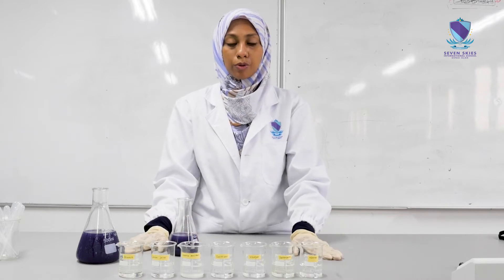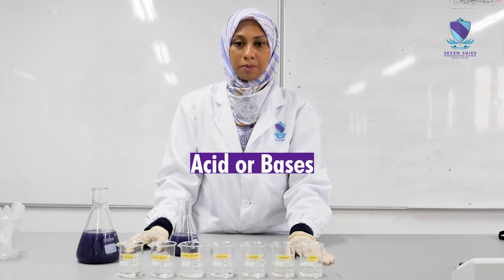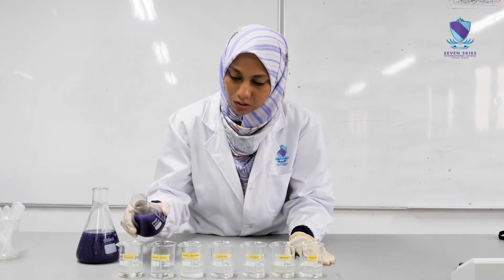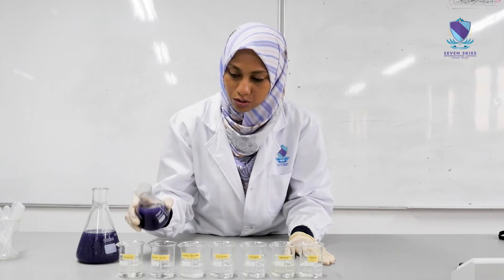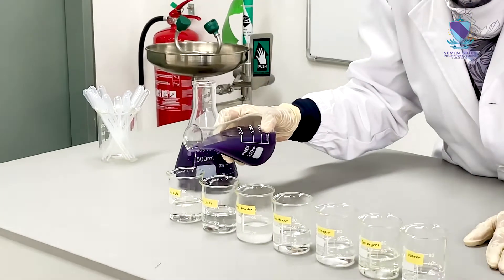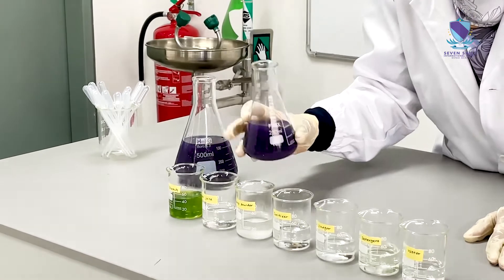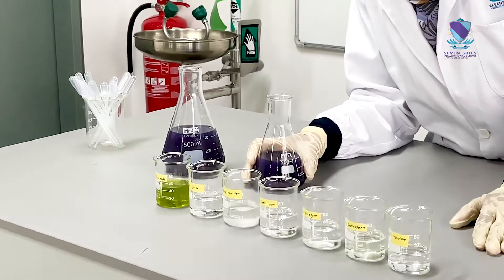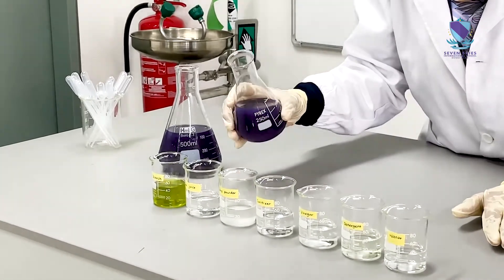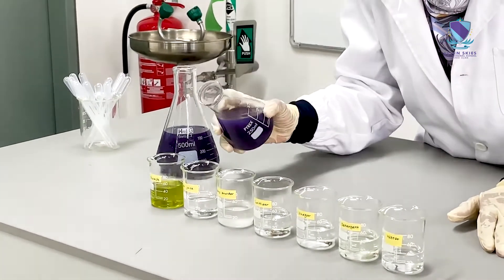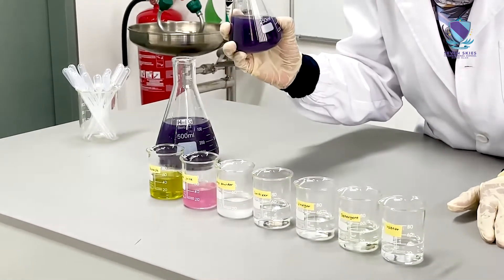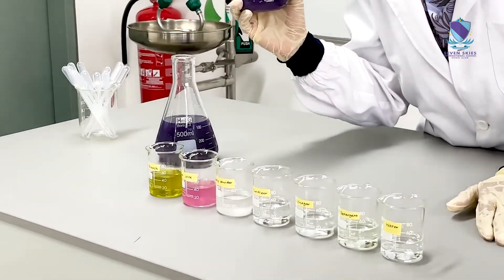So what we want to know here is whether each solution is an acid or a base. We're going to mix these solutions with the red cabbage juice and look at the color changes. You can see the color changes to yellowish and greenish. And when we mix the red cabbage juice with lemon juice, it changes to pink color.